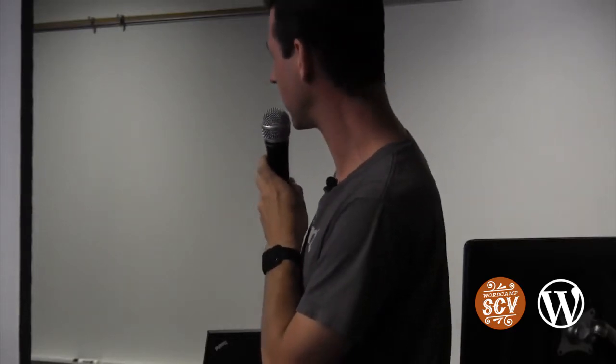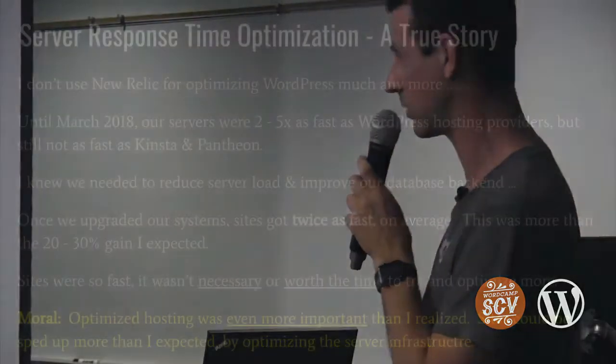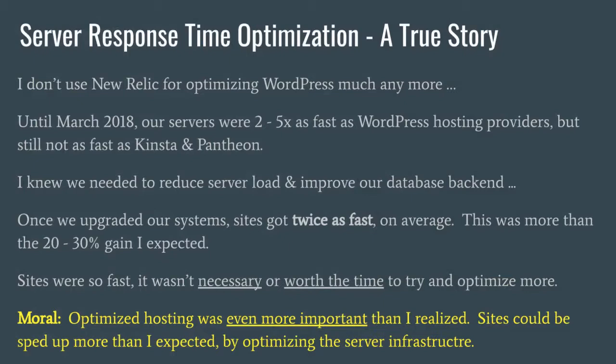New Relic is a great tool, but I don't use it as much anymore. A little over a year ago, our servers were faster than most WordPress hosts, but still not as fast as Kinsta and Pantheon. I was using New Relic to figure things out. Then we upgraded our servers and things got twice as fast — even more than the 20–30% gain I expected. Sites were so fast it wasn't worth the time to optimize further. Moral of the story: optimizing the host infrastructure was even more important than I realized.